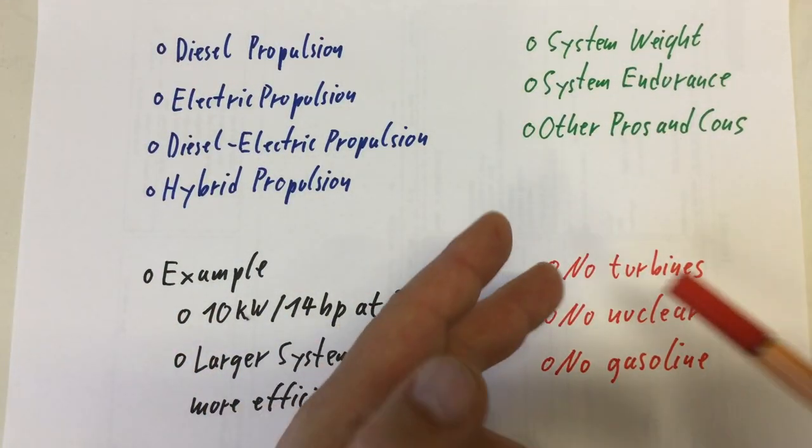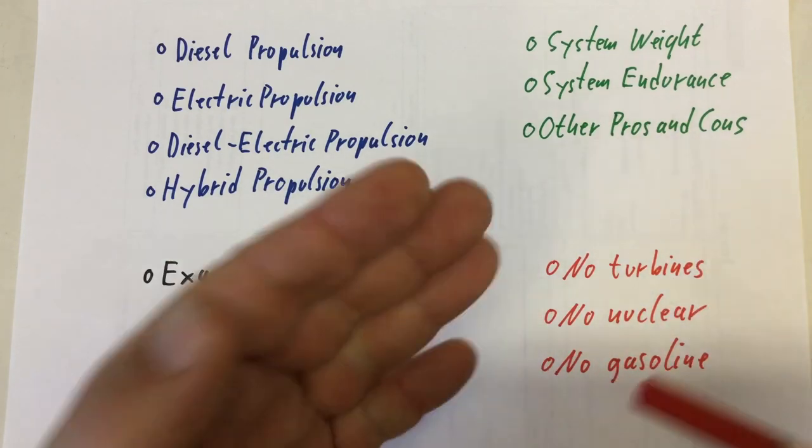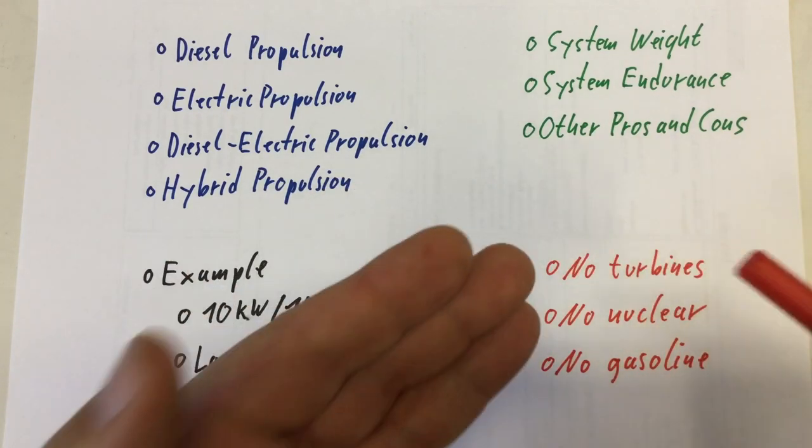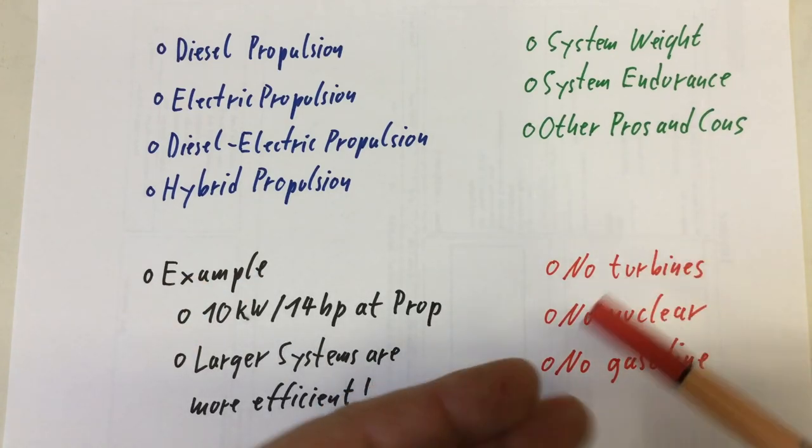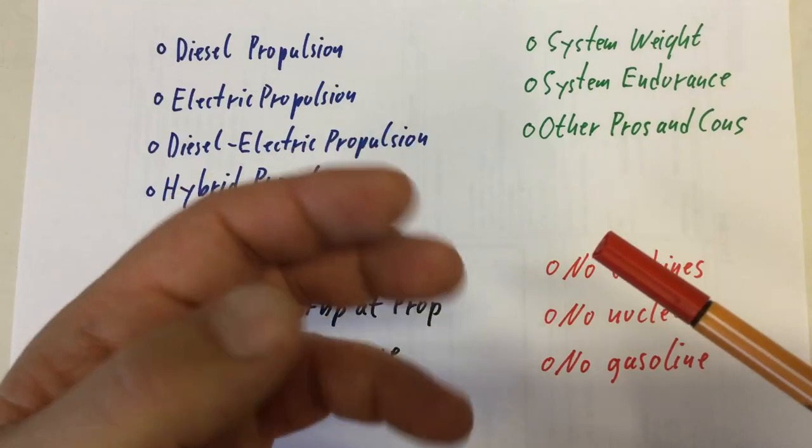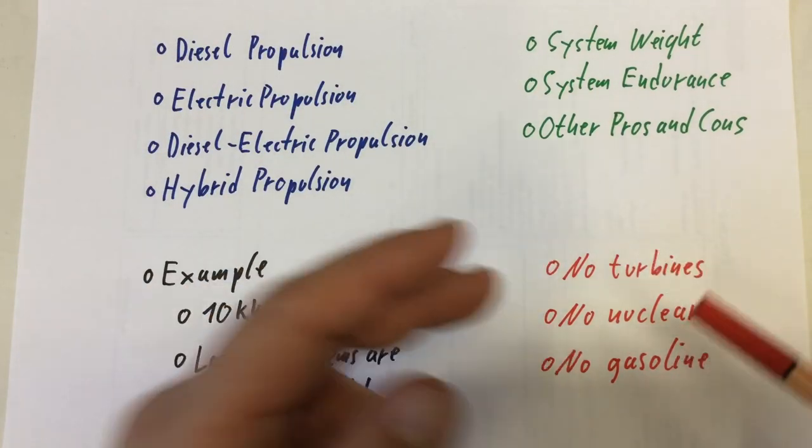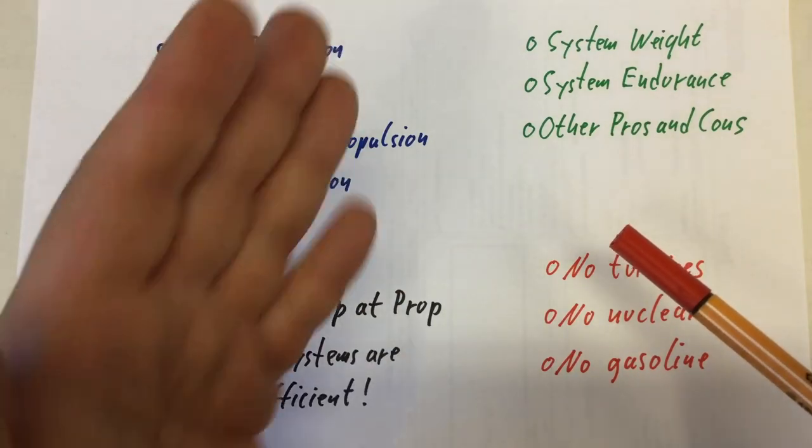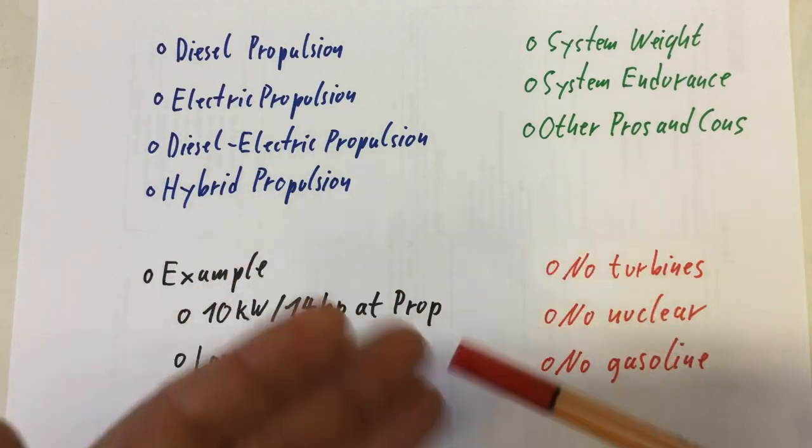I will not talk about turbines, gas or otherwise, nuclear power, which normally includes some kind of steam turbines, or gasoline engines. If you plant two, three or four 150 horsepower gasoline outboards on your transom, any discussions about efficiency are moot.